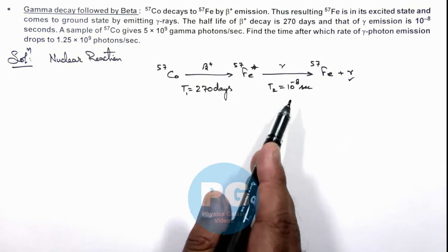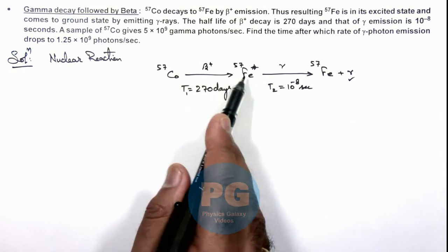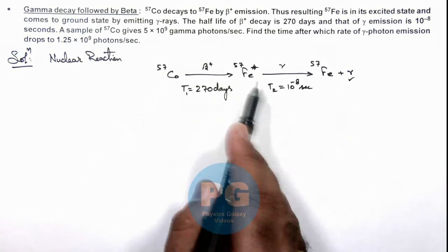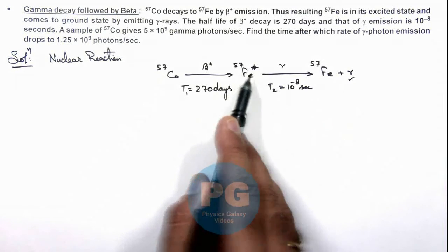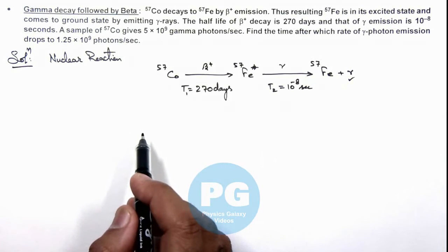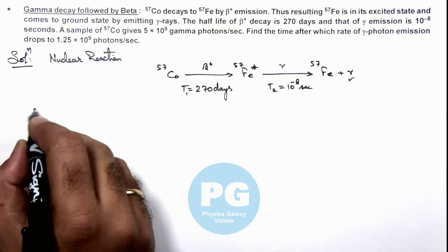That means in one second, if 10 cobalt decays to iron, that means in one second again 10 gamma will be produced, because instantaneously iron decays to the normal state along with the gamma emission.